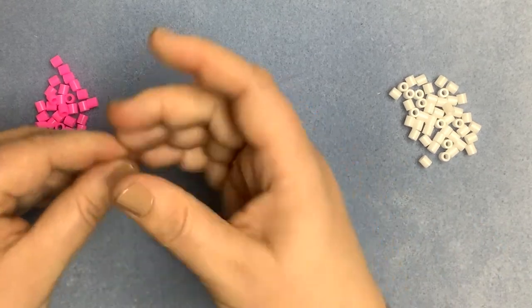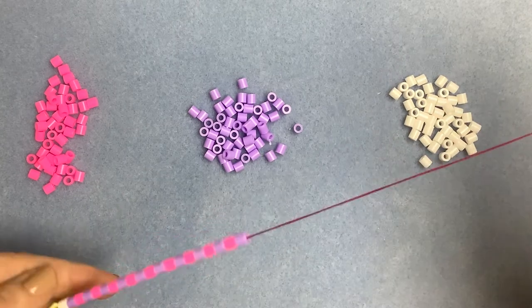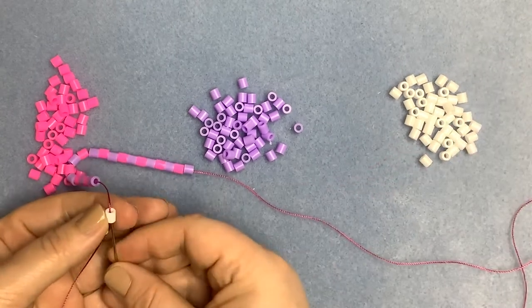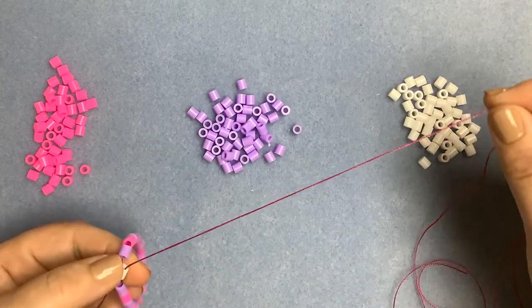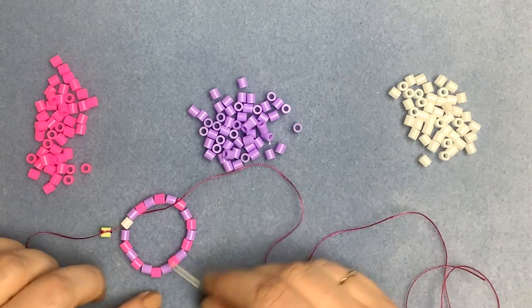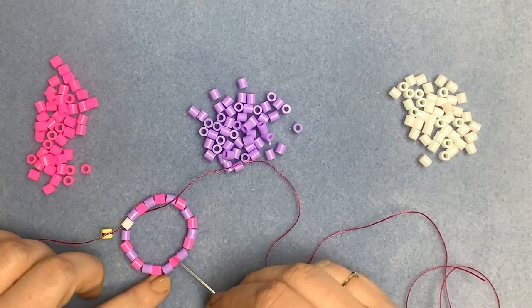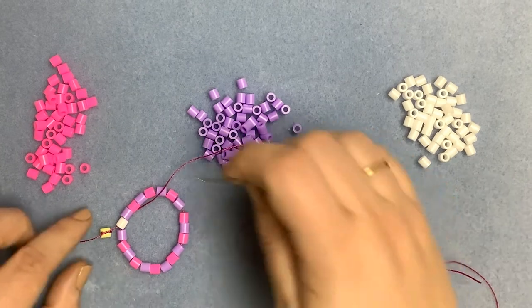So what we're going to do now is we're going to join these beads into a circle just by passing through the first bead on the round a second time. So there you can see we've got them in a circle. Now because your beads are cylinders, they're not going to sit in a perfect circle.